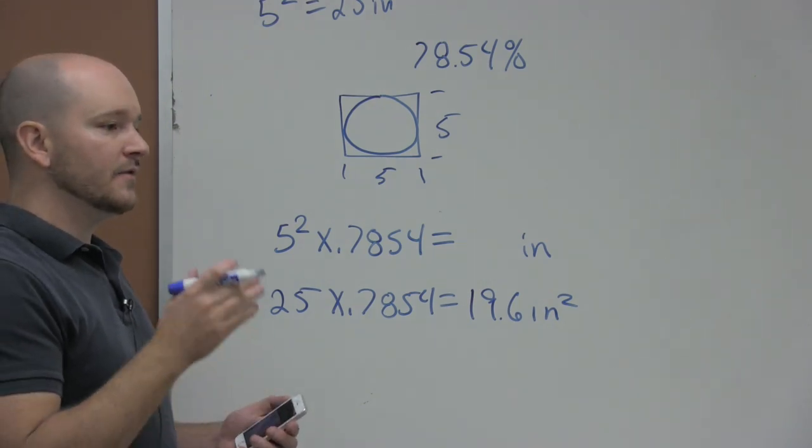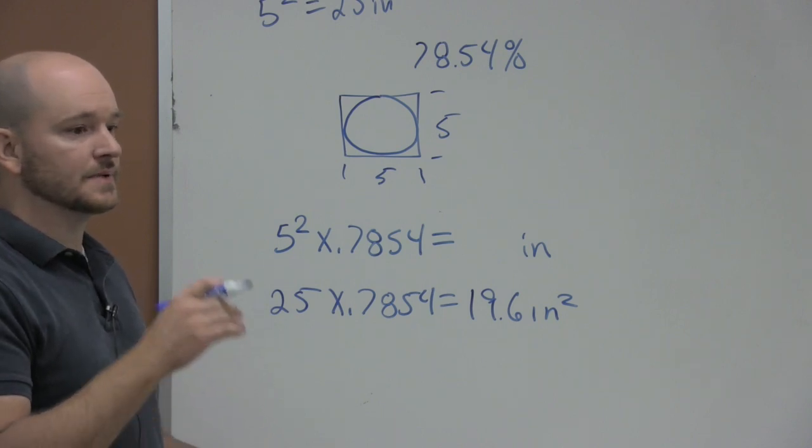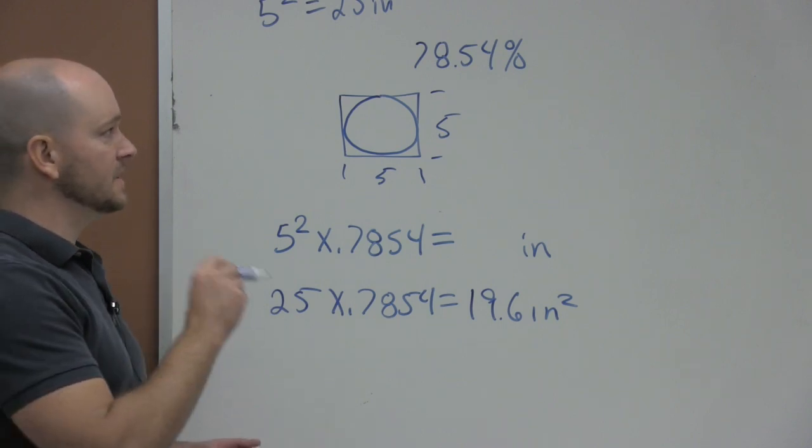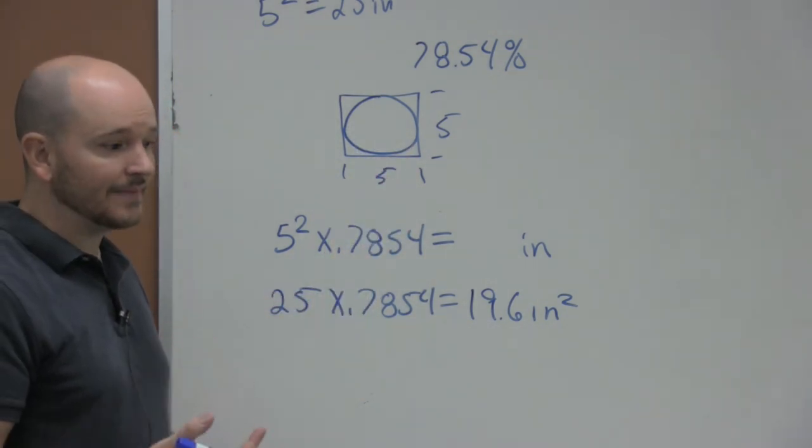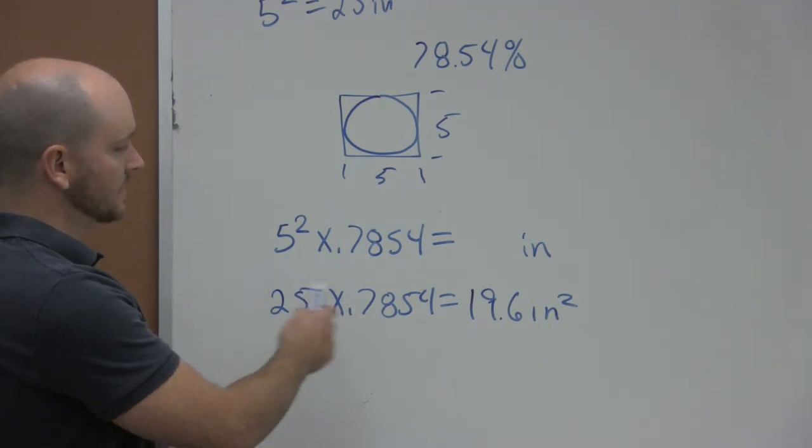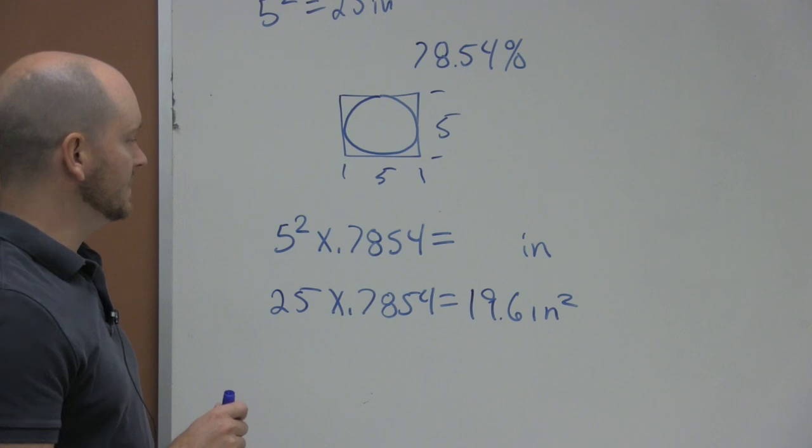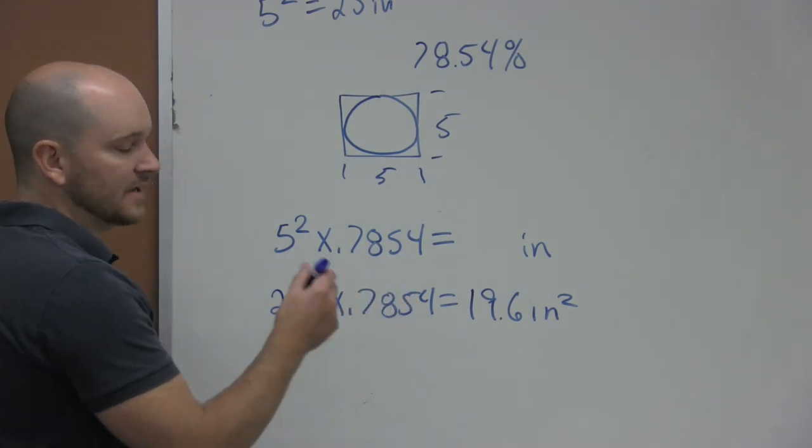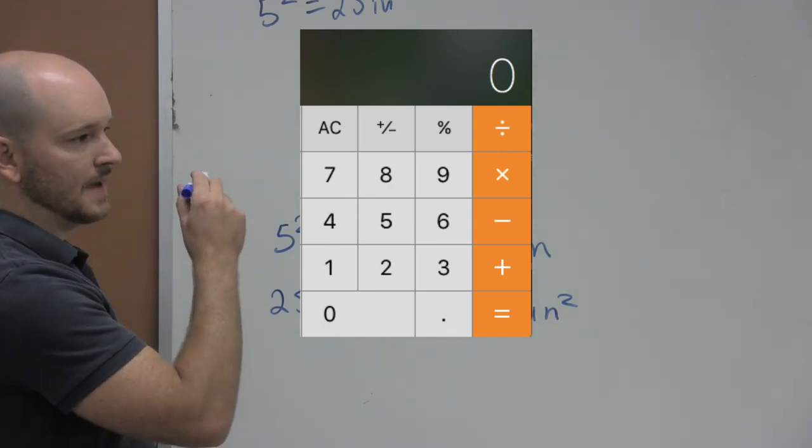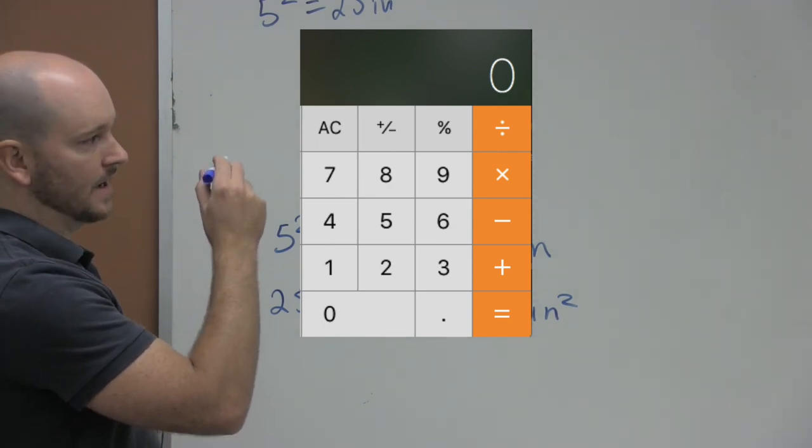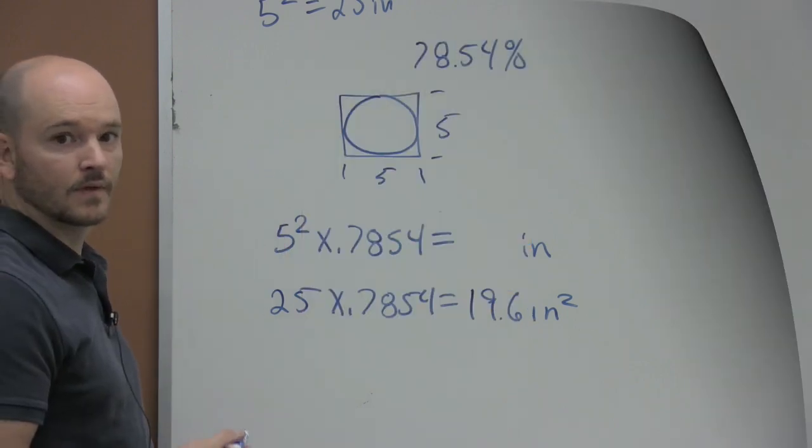Now there are other ways you can do it. If you have the radius, you can take the radius squared times pi. There are a lot of different ways to do this, but since manufacturers typically give you the diameter of the circle, not the area and not the radius, I have found this to be the most precise way to do it. How I remember 0.7854 is if you look at your calculator and you look at the upper left-hand corner, you just make a square going clockwise: 7, 8, 5, 4.